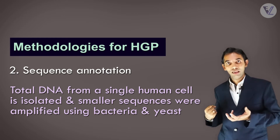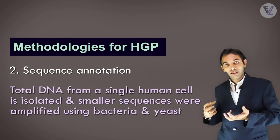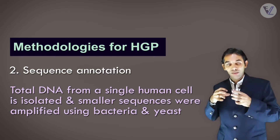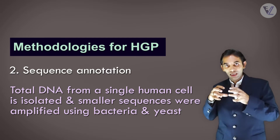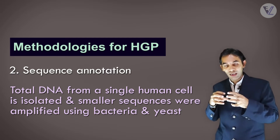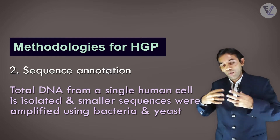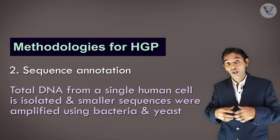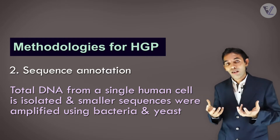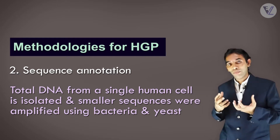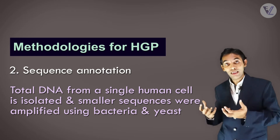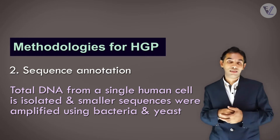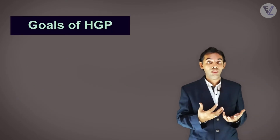Under Sequence Annotation, the total DNA present in a single human cell was isolated. Small sequences of this DNA were amplified — that is, their number was increased and multiplied — by using bacteria and yeast as vectors.